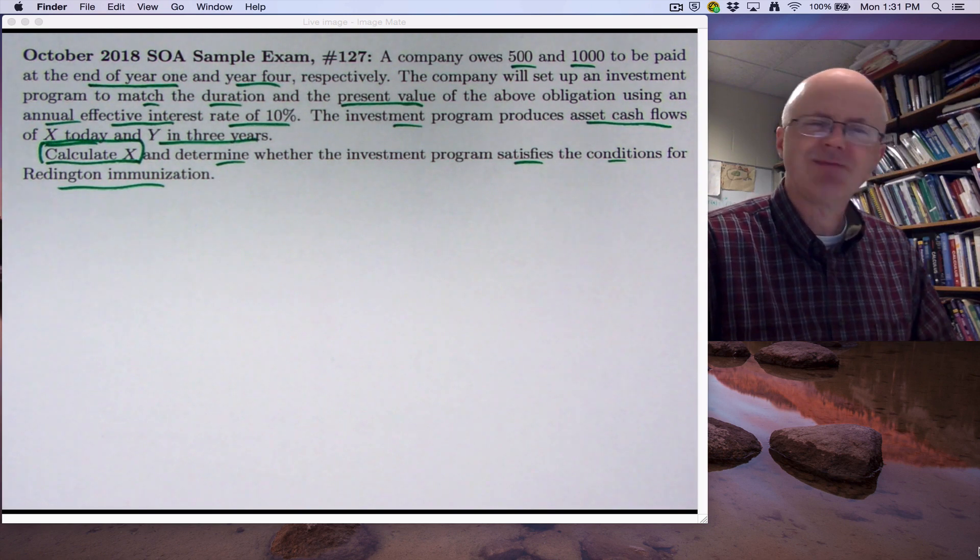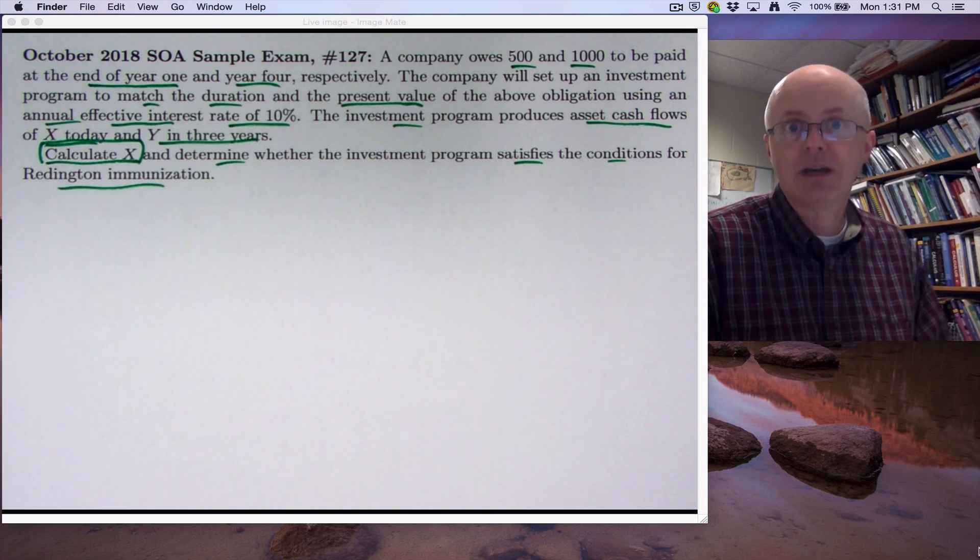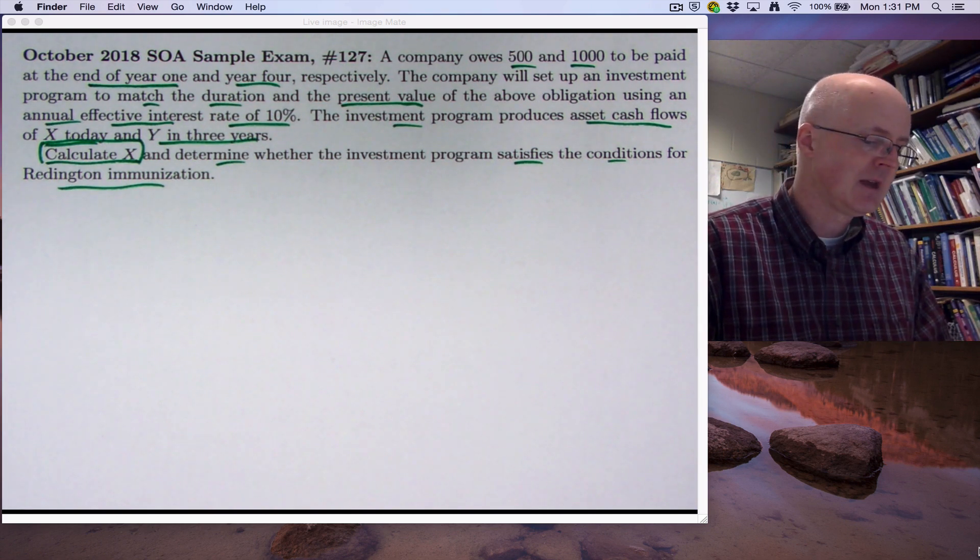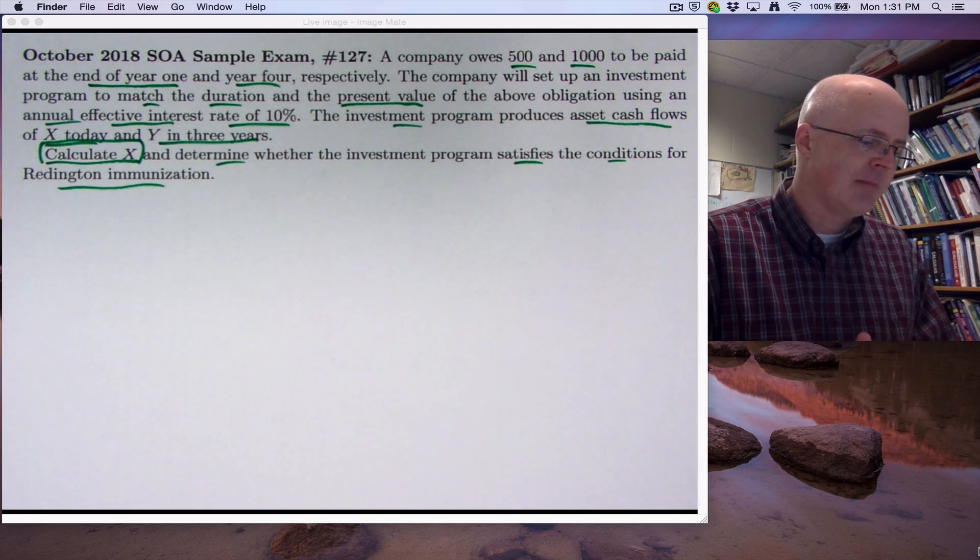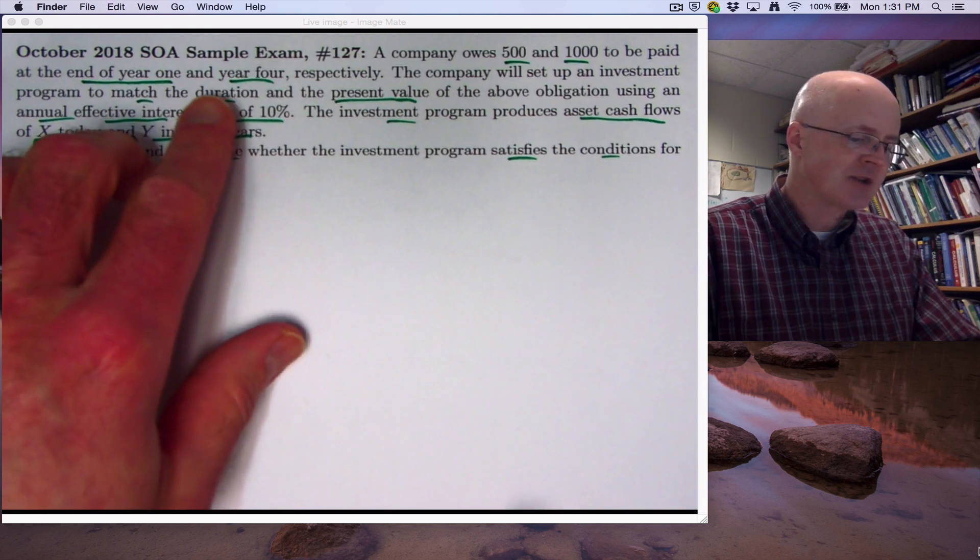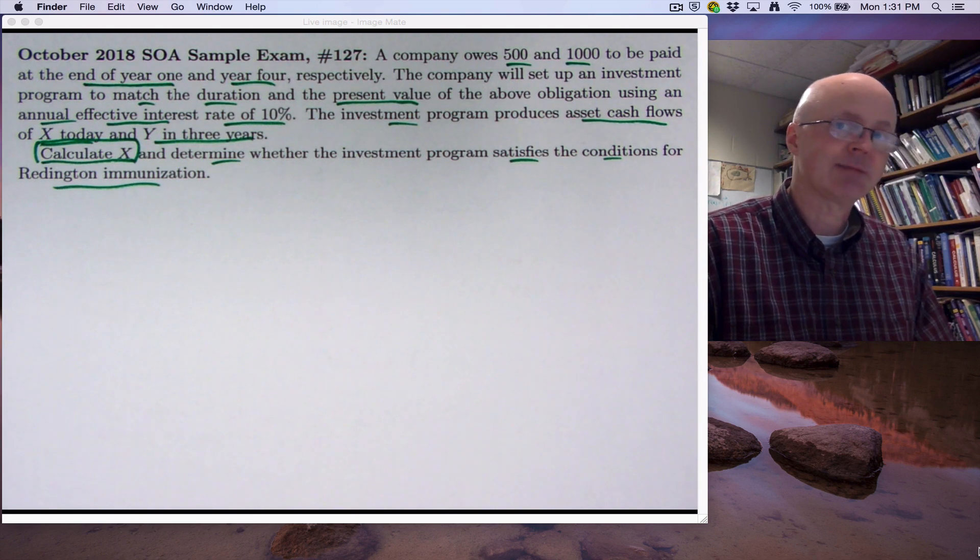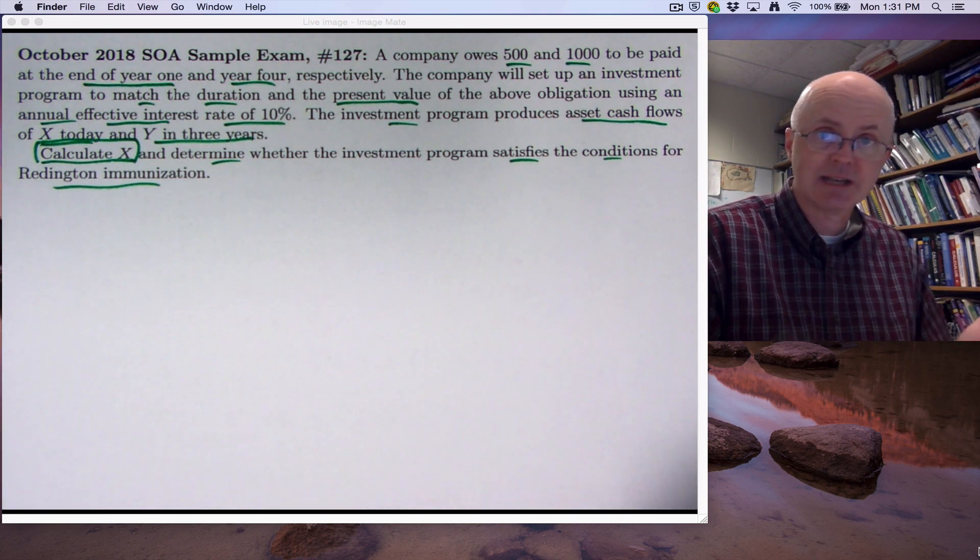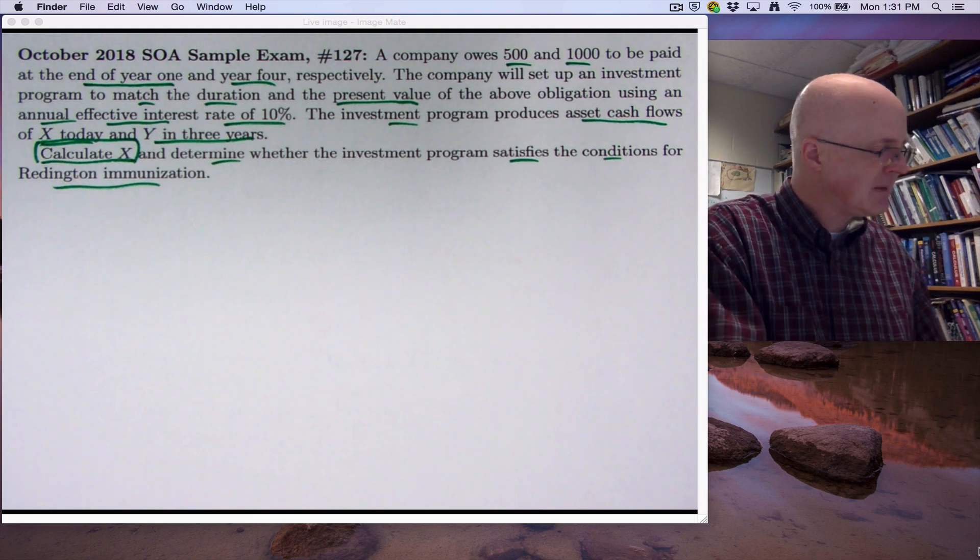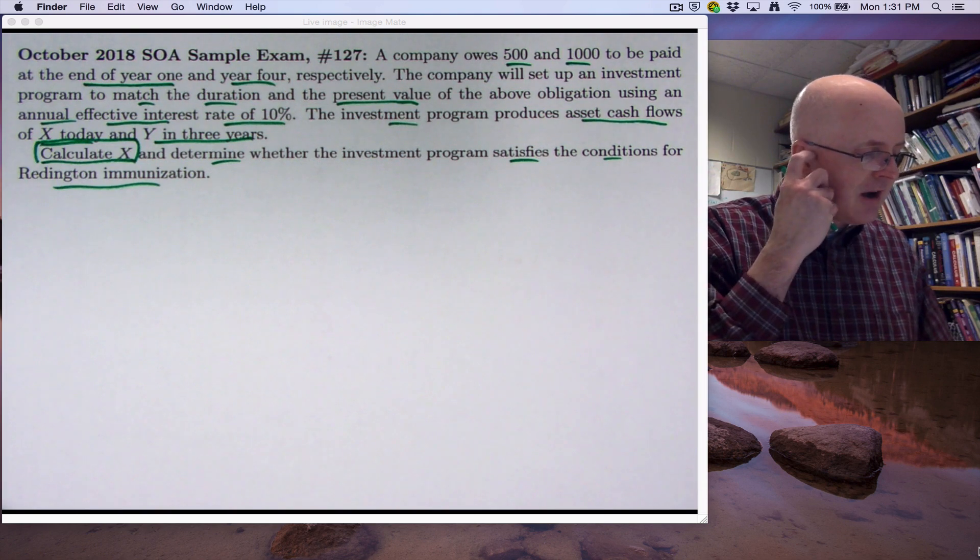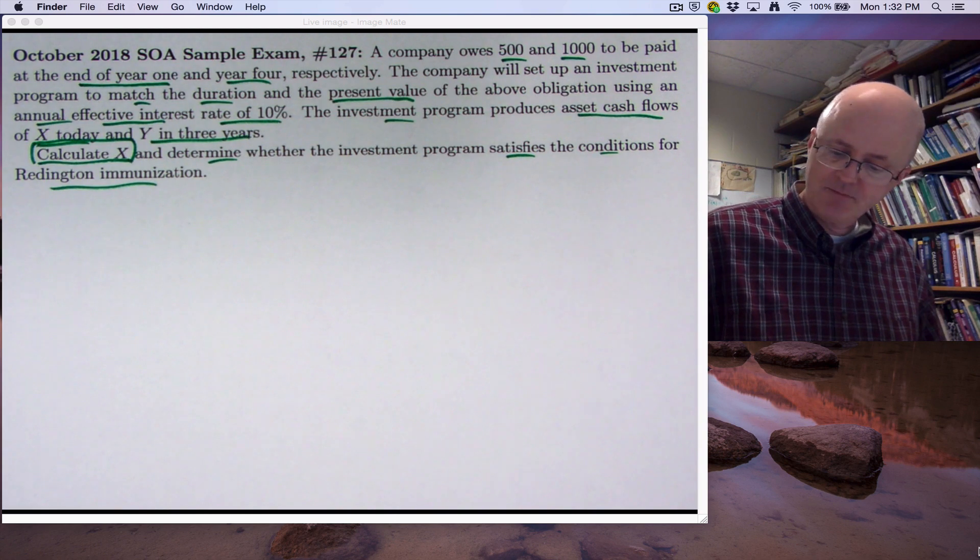By the way, achieving a match of duration and present value is still probably a good idea, even if you cannot achieve immunization. The immunization just protects you against small changes in the interest rates. When we're not immunized, yet we have matched the duration and present value, we can maybe still make adjustments either by changing our investments or maybe in changing our cash flows, getting more cash, we can still cover our liabilities.